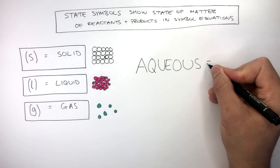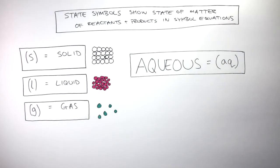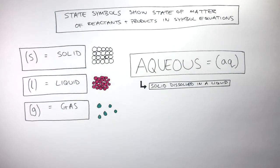Aqueous can be simplified as AQ in brackets. Aqueous means a solid has dissolved in a liquid and we call this a solution. For example, if salt, which is a solid, dissolves in water, which is a liquid, we now say the salt is aqueous or we say it is in solution because the salt has dissolved in water.